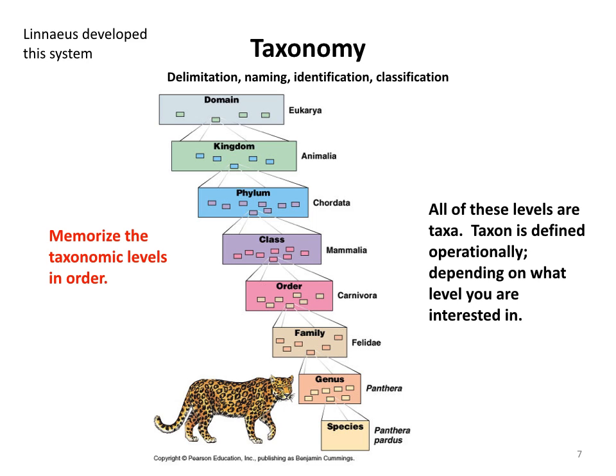For this course, memorize the taxonomic levels in order. Most inclusive to least inclusive: domain, kingdom, phylum, class, order, family, genus, species. Least inclusive to most inclusive is the reverse. The term 'taxa' (singular: taxon) can refer to any of these levels — it's defined operationally depending on what you're discussing. For example, you could refer to species of cats or orders of insects all as taxa.